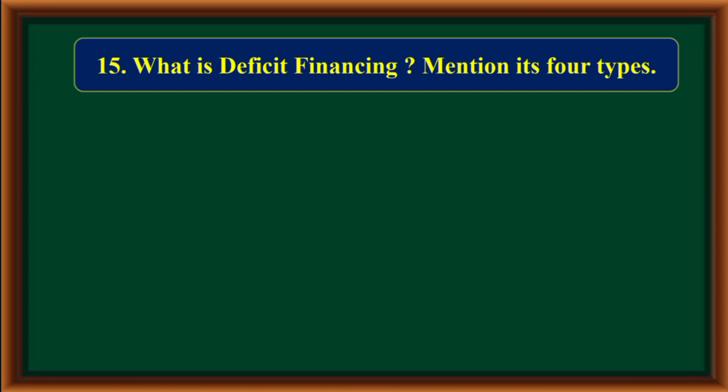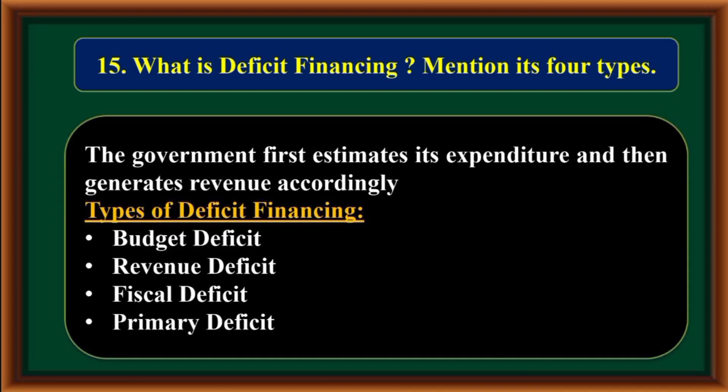What is deficit financing? Mention its four types. The government first estimates its expenditure and then generates revenue accordingly. Types of deficit financing: budget deficit, revenue deficit, fiscal deficit, and primary deficit.